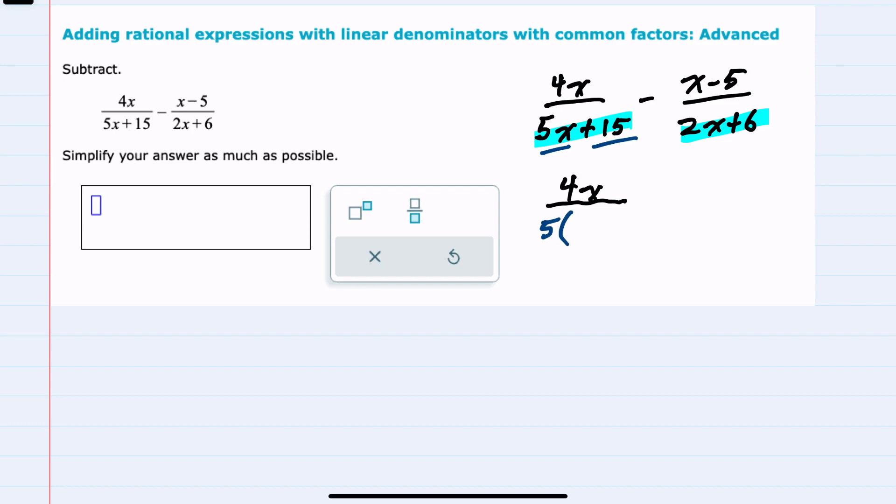When I factor out a five from the first term I'm still left with an x, and when I factor out a five from the second term I would be left with a plus three. We could check by distributing the five to see that we get back to where we started.